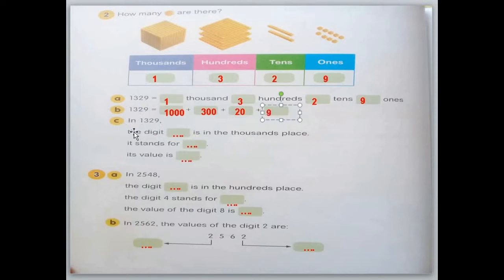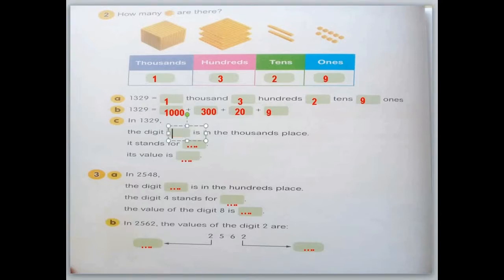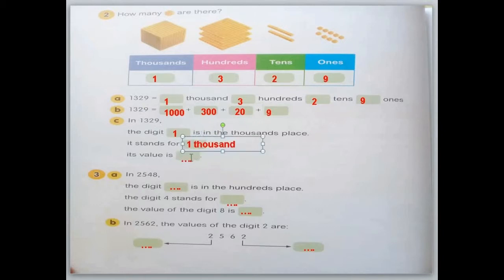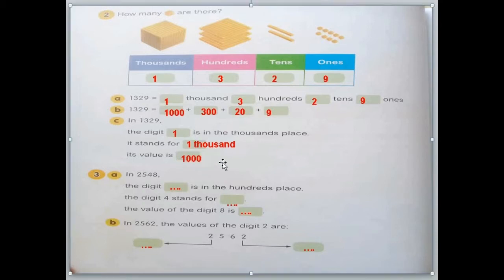So question C: in 1,329, the digit in the thousands place is 1, and it stands for 1,000. Don't forget — you have to write the number 1,000.